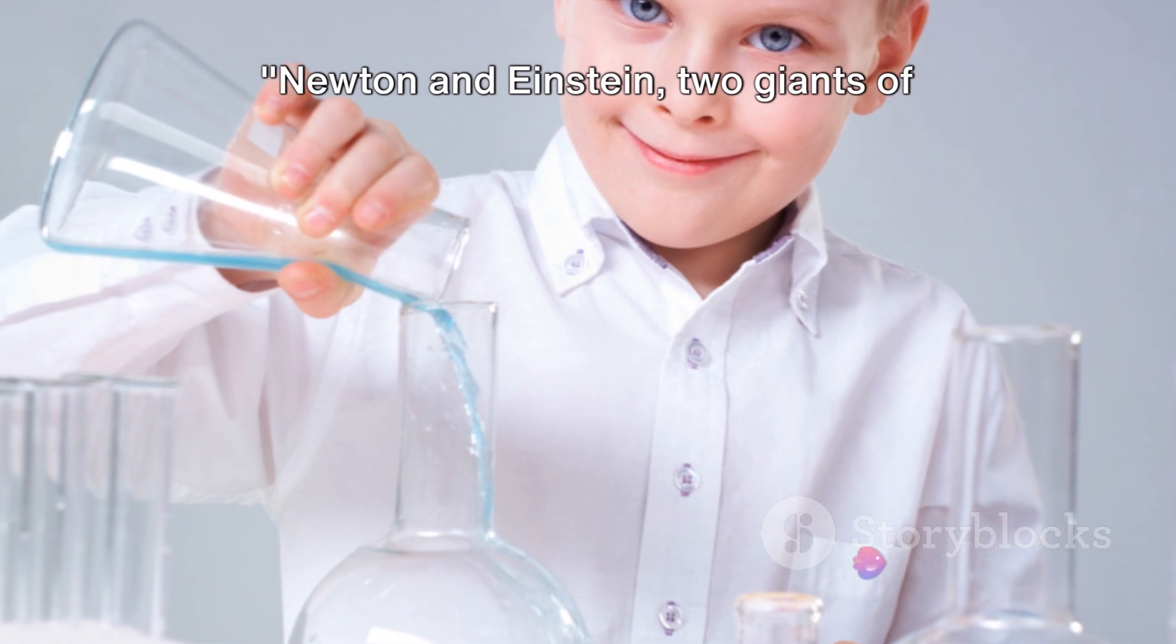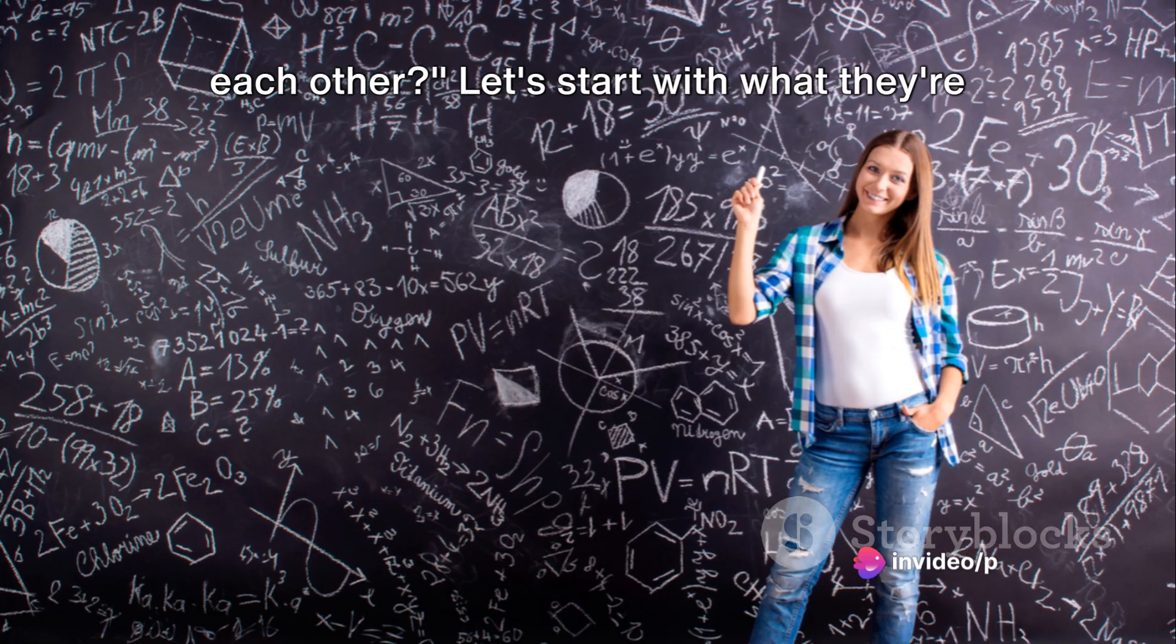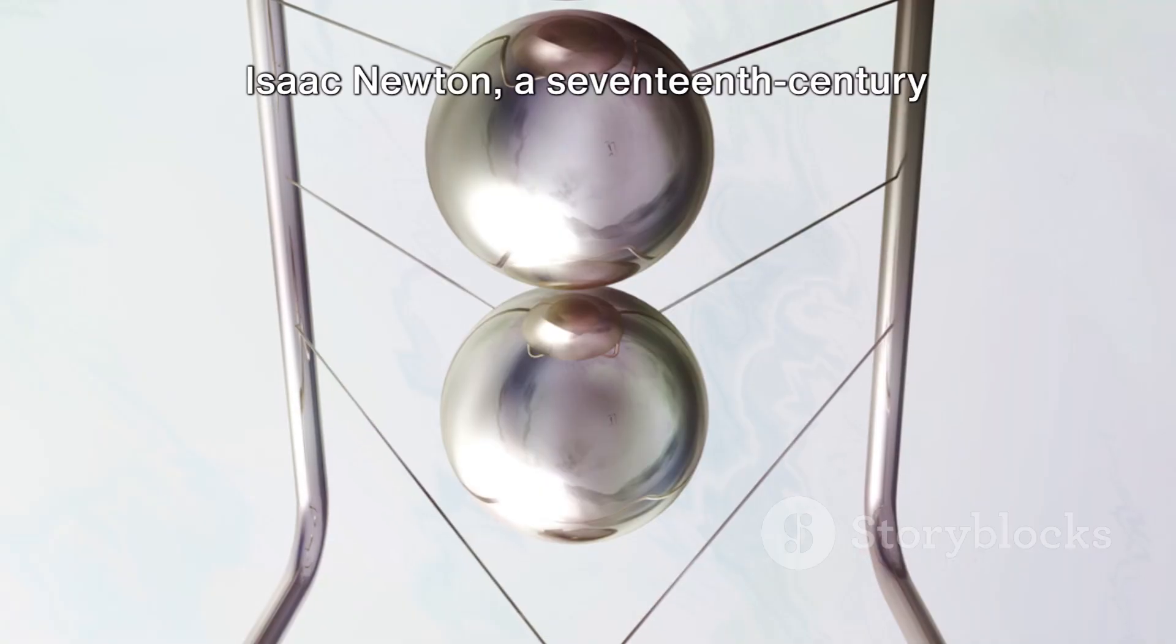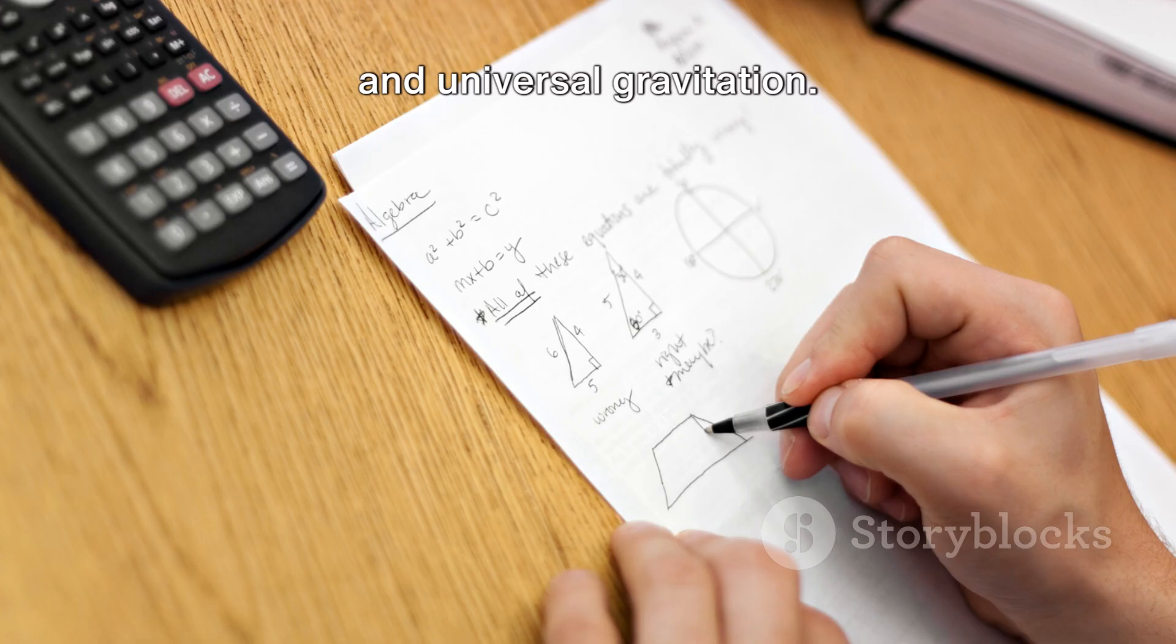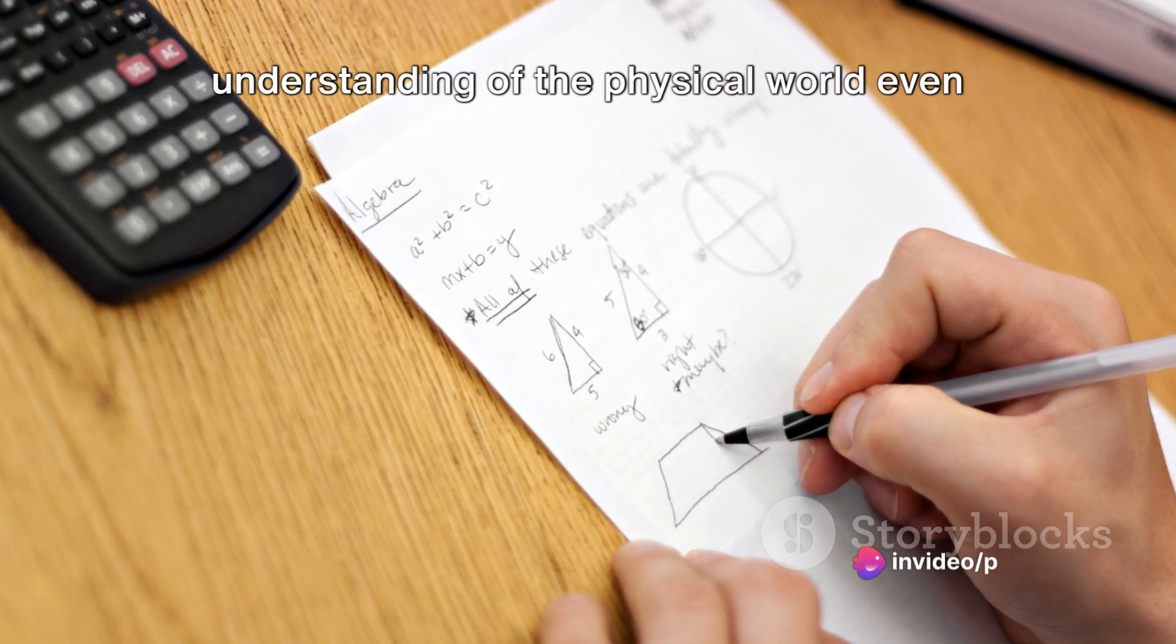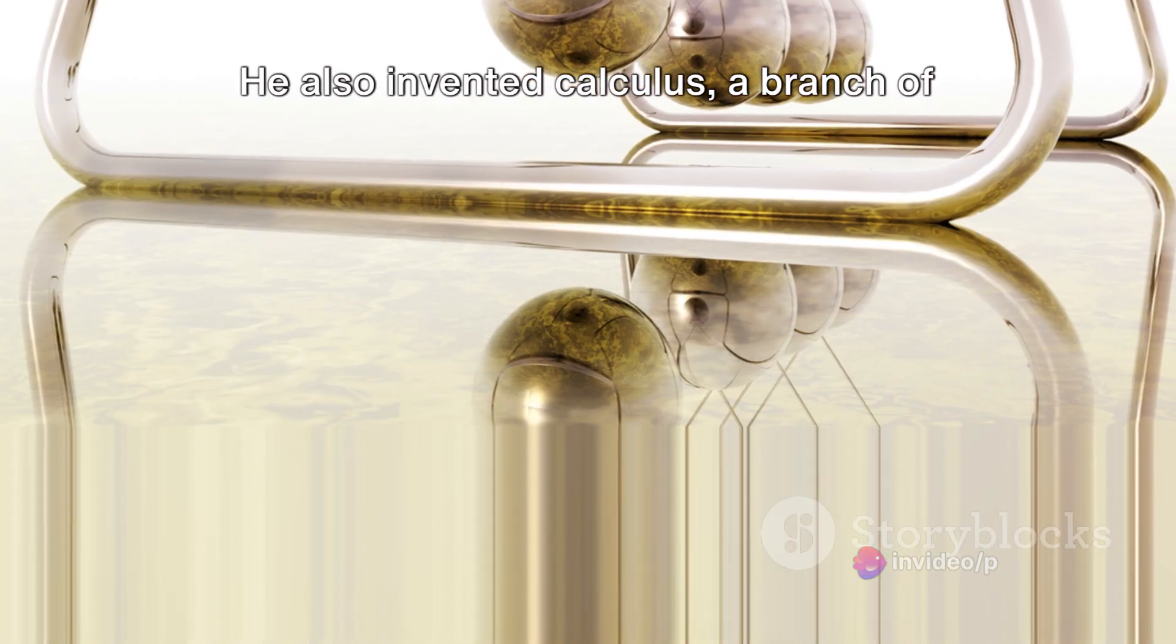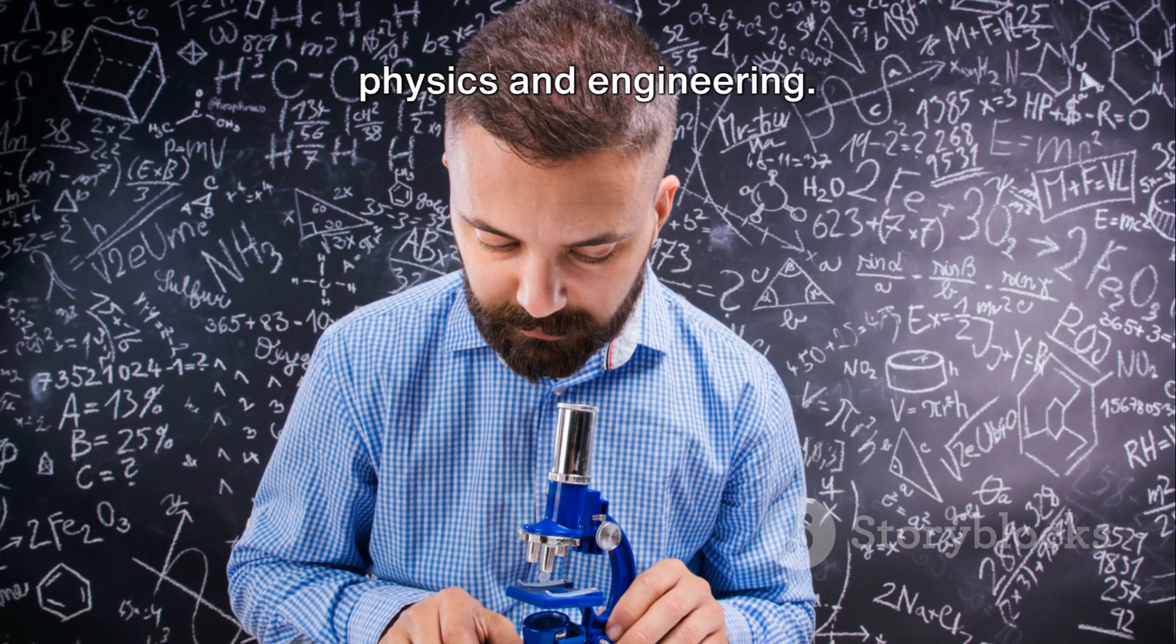Newton and Einstein, two giants of science, but how do they stack against each other? Let's start with what they're most known for. Isaac Newton, a 17th century polymath, formulated the laws of motion and universal gravitation. These laws are fundamental to our understanding of the physical world even today, centuries later. He also invented calculus, a branch of mathematics that is integral to modern physics and engineering.